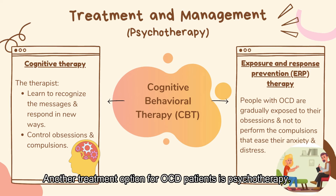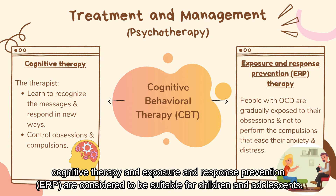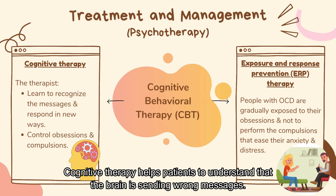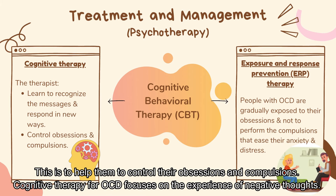Another treatment option for OCD patients is psychotherapy. The cognitive behavioural therapy, CBT, that involves psychoeducation, cognitive therapy, and exposure and response prevention, ERP, are considered suitable for children and adolescents. Cognitive therapy helps patients to understand that the brain is sending wrong messages. The therapist will help the patient learn how they should recognize these messages and respond to them in new ways, to help them control their obsessions and compulsions.